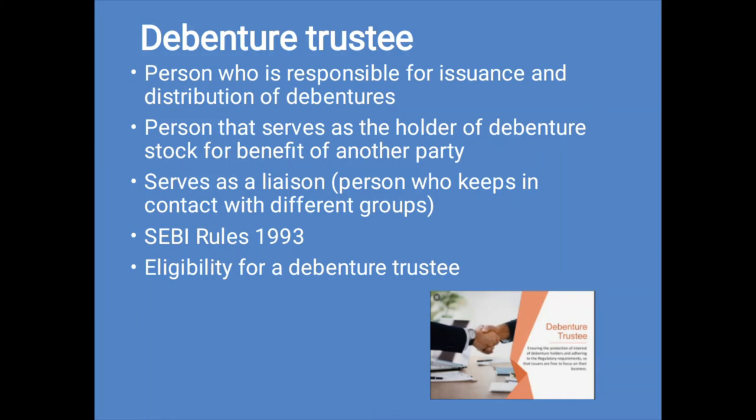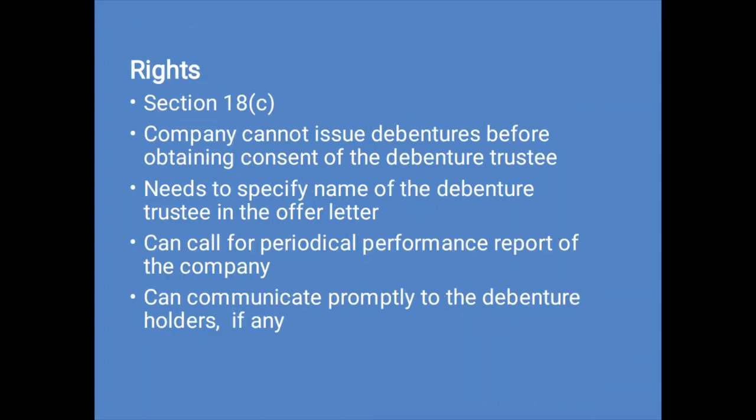Regarding eligibility for a debenture trustee: to act as a debenture trustee, the entity should either be a scheduled bank carrying on commercial activity, a public financial institution, an insurance company, or a body corporate. The entity should be registered with SEBI to act as a debenture trustee. All appointments of the debenture trustee shall be made under Section 71 of the Companies Act. Now let us move on to the rights of a debenture trustee. Section 18, clause C of the Companies Act states that a company in no case can issue debentures before the appointment of a debenture trustee. The company cannot issue debentures before obtaining the consent of the debenture trustee, and has to specify the name of the debenture trustee in the offer letter.